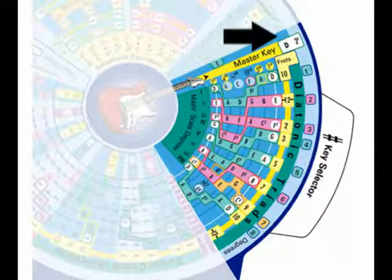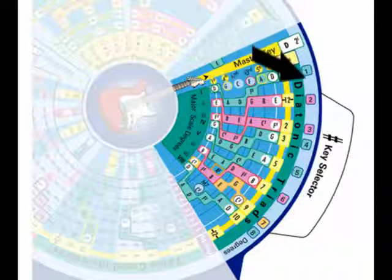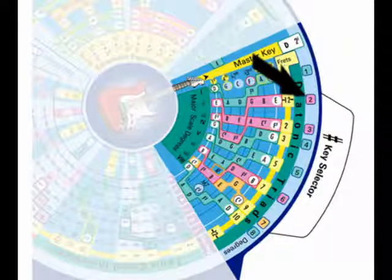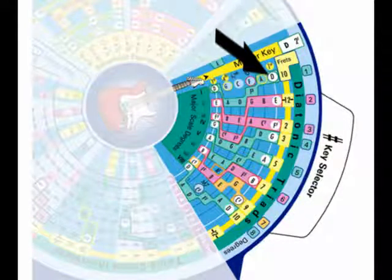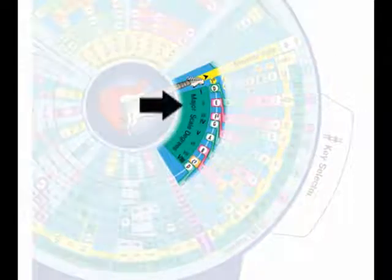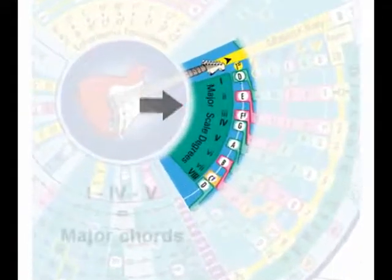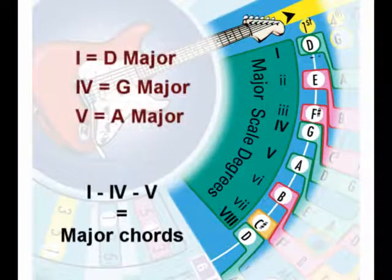This tells us the key of D has two sharps. By moving to the outer edge, these numbers represent the degree of scale, and they work hand-in-hand with the notes in the white area. D would represent the first degree of the scale, E would be the second degree, and so on. The numbers in yellow are the frets. By moving to the inner part of the wheel, the green area tells us the major scale degrees and, most importantly, the quality of the chord. If we look at the bold numbers — one, four, and five — this tells us our major chords.